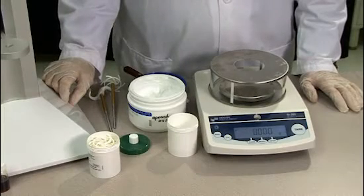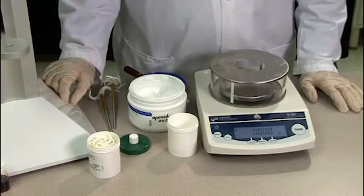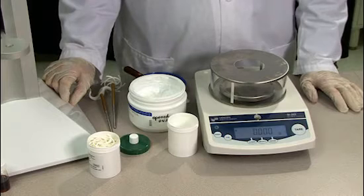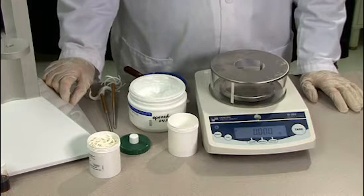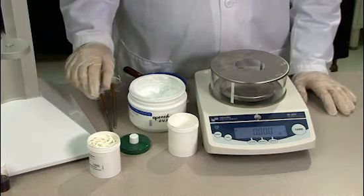The second part of the lab is to make coal tar ointment using a different method. This is the ungulator. We will use the same materials.